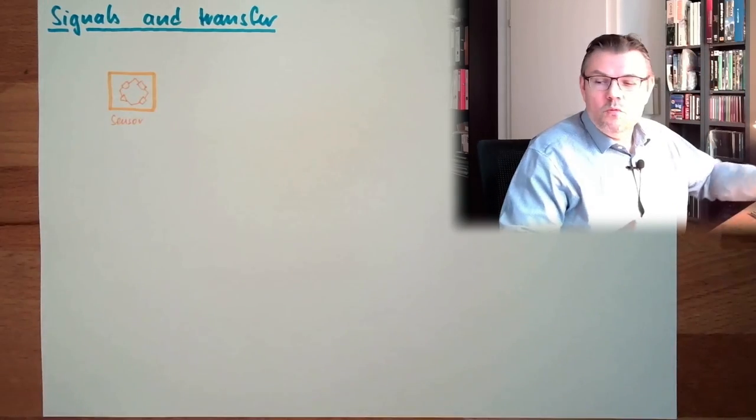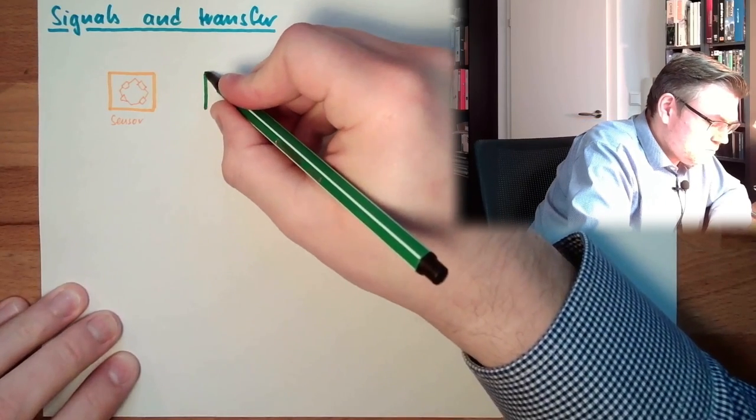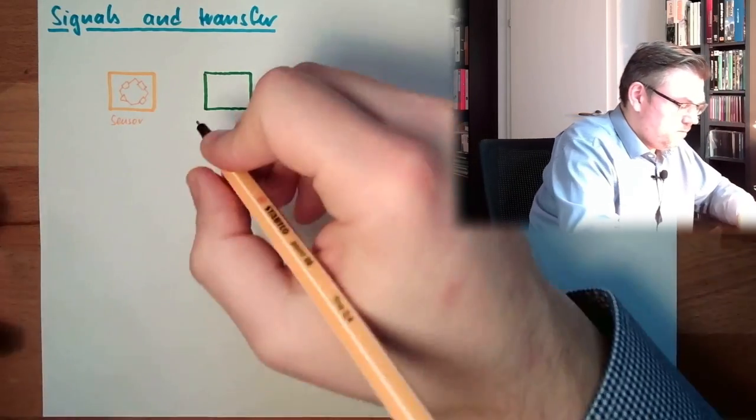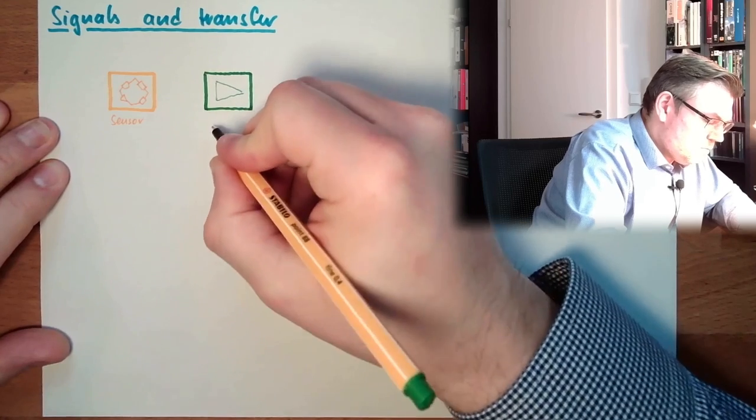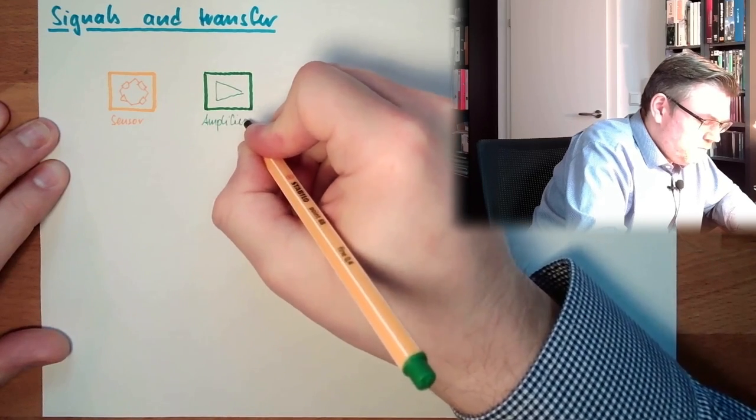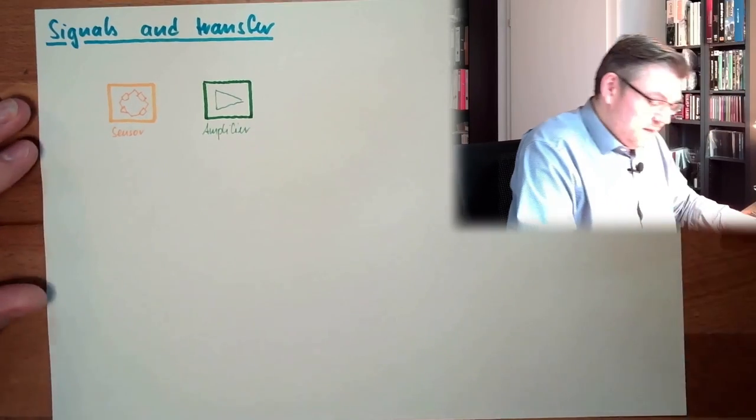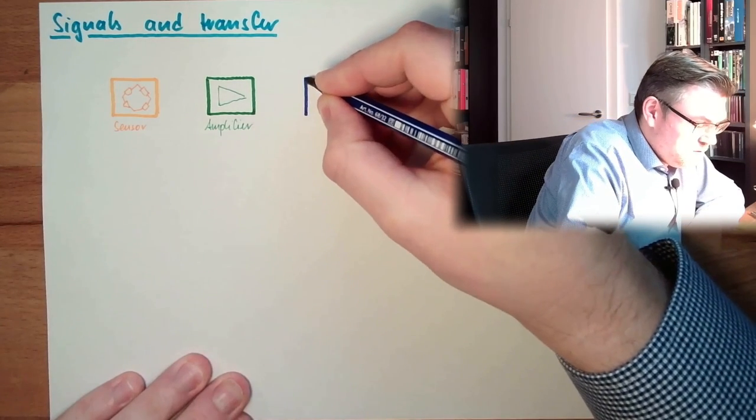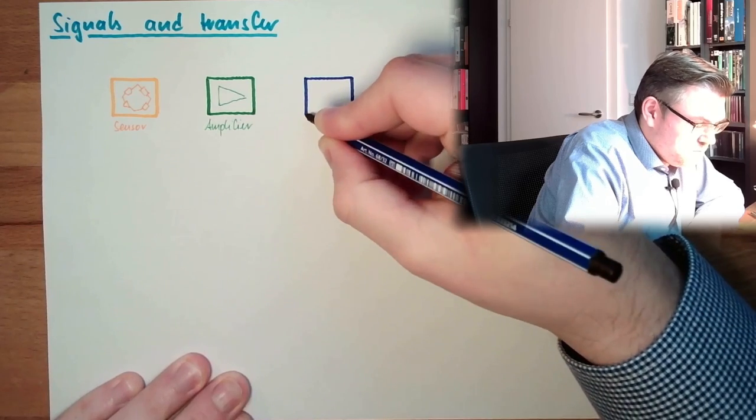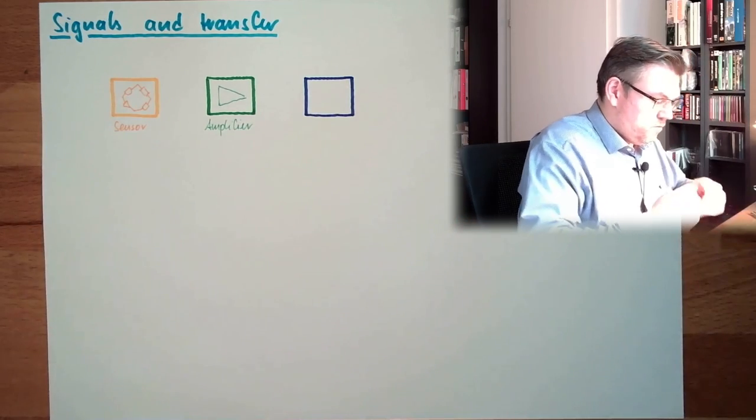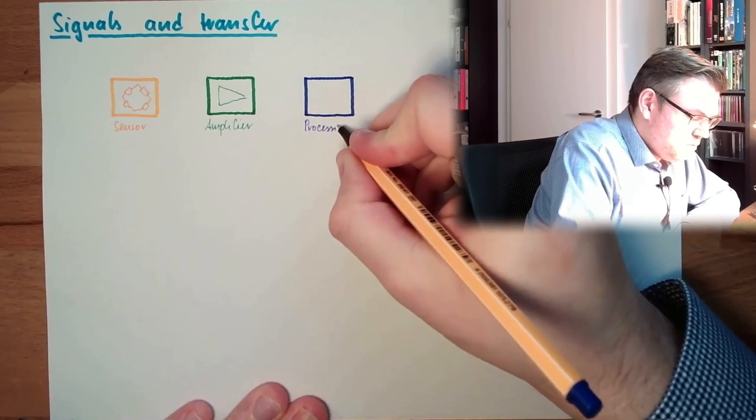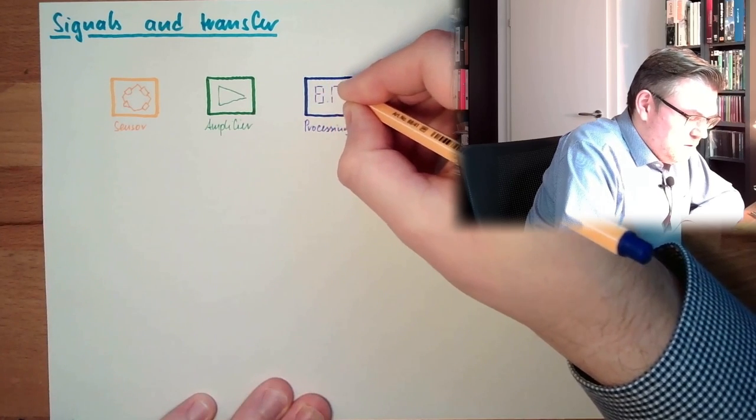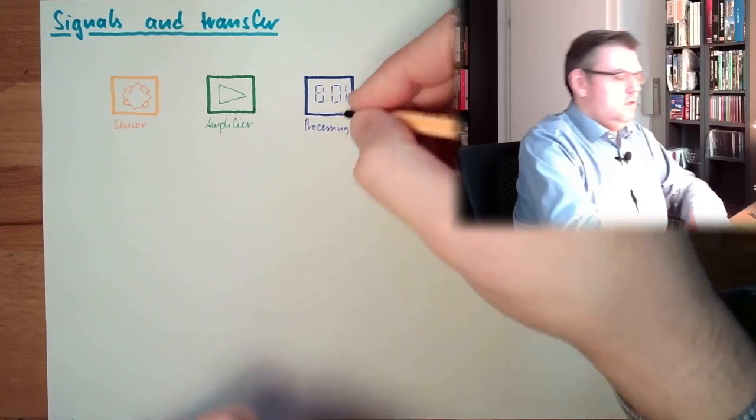Then we have somewhere, we have the amplifier. So we need an amplifier to gain the signal from the sensor, right? And somewhere we have some devices which to process. I will make simply some digits display, for instance.